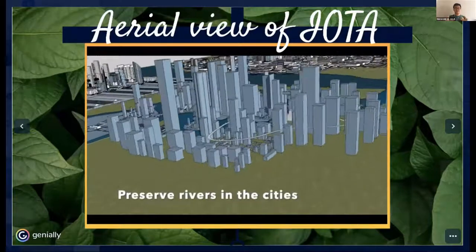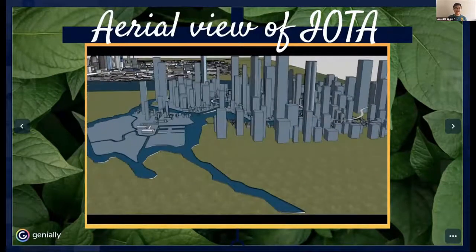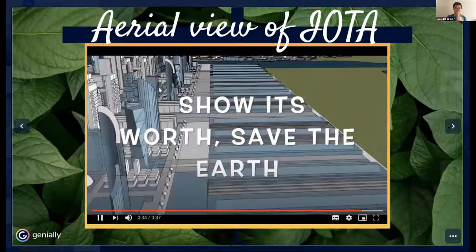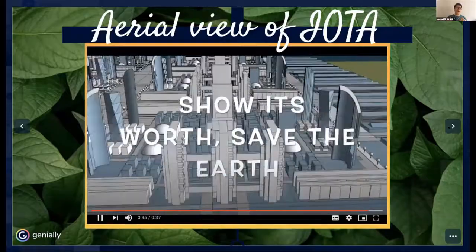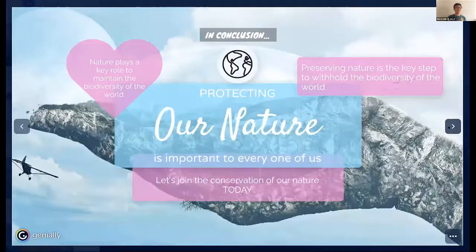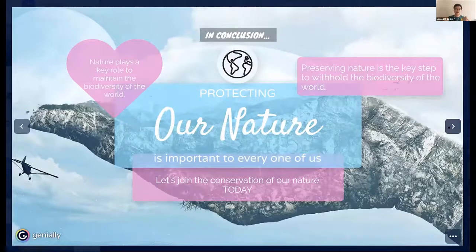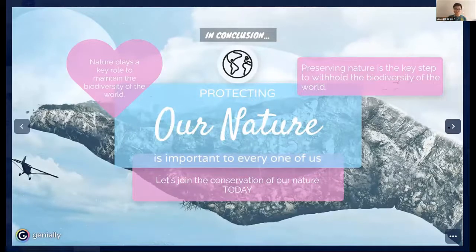That's all for the aerial view of our city, IOTA. Our motto: show its worth, save the Earth. In conclusion, protecting our nature is important to every one of us, because nature plays a key role in maintaining the biodiversity of the world. Our power may be limited, but as long as we humans group together and strive for a change, a better and cleaner world is just around the corner. Our city's name, IOTA, means a very small amount — and every one of us only has a small amount of power. But as the old saying goes, many a little makes a middle. With unity, we can build a better community. Thank you.